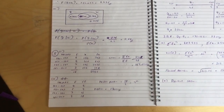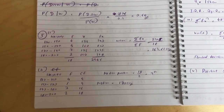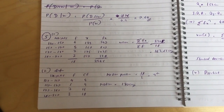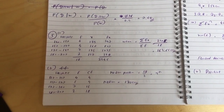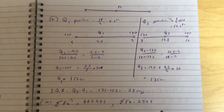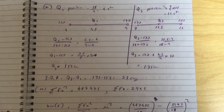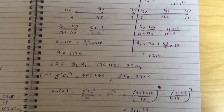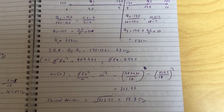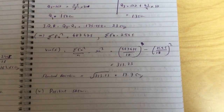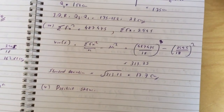Question 5 is a GCSE-style question. You work out the mean, then the median — no linear interpolation needed because the 9th value falls exactly on 170. Then work out Q1 and Q3, giving an interquartile range of 23 cm. Work out the standard deviation using the formula, and finally the distribution has a positive skew.